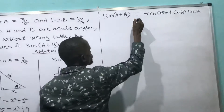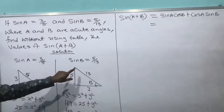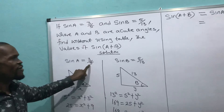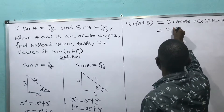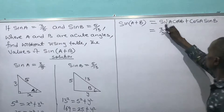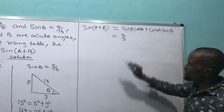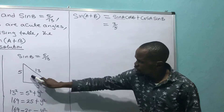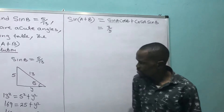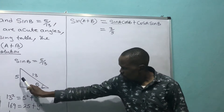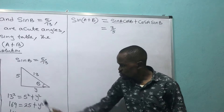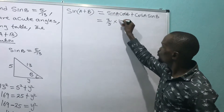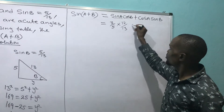I go to triangle A to get sin A, which is 3 over 5. I place that here: 3 over 5. Now for cos B, I go into triangle B. Cosine means adjacent over hypotenuse, so cos B equals 12 over 13. I multiply: 3/5 times 12/13.